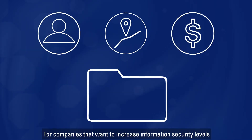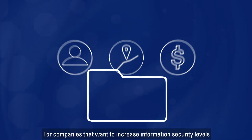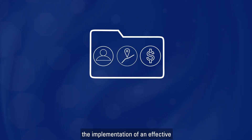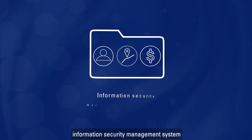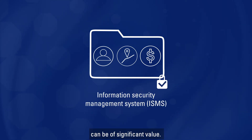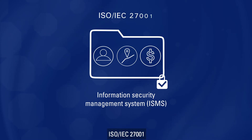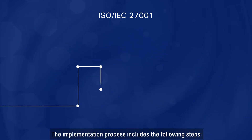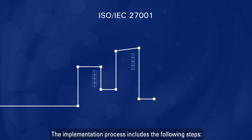For companies that want to increase information security levels whilst improving cost efficiencies, the implementation of an effective information security management system can be of significant value. ISO IEC 27001 is the leading management system standard for information security. The implementation process includes the following steps.